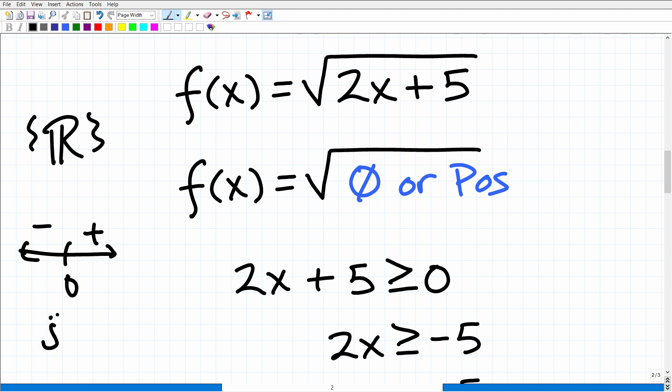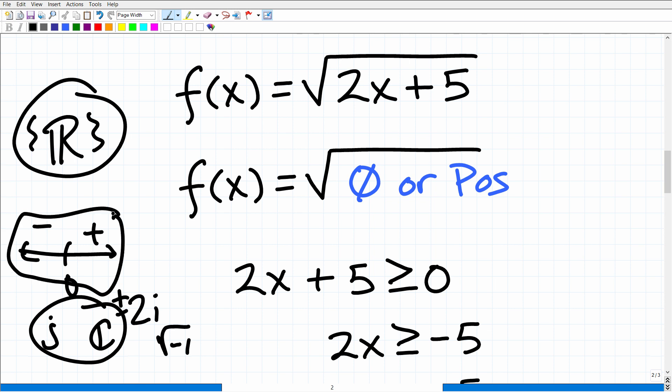We are not talking about imaginary numbers or complex numbers. These are numbers like 2i, plus or minus 2i, the square root of negative 1. So we can't deal with the square root of negative numbers. So in other words, when we're talking about the real number system, these complex imaginary numbers are not on the real number line.